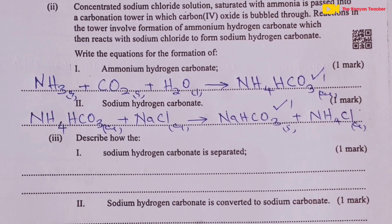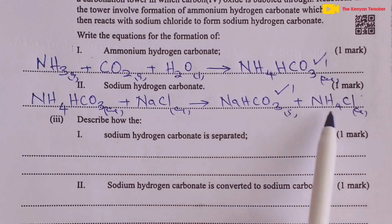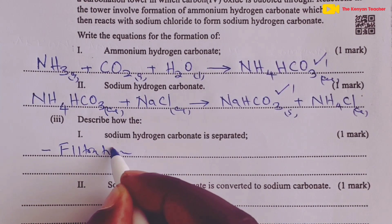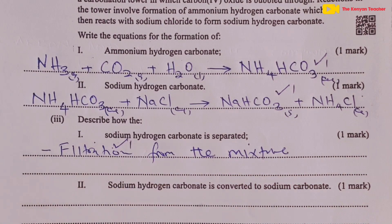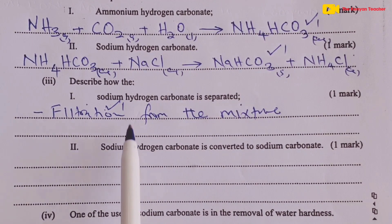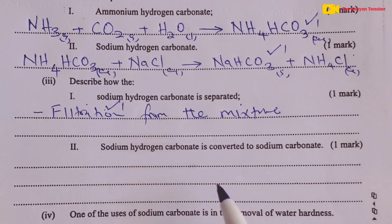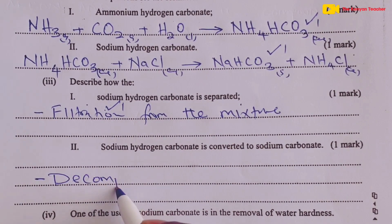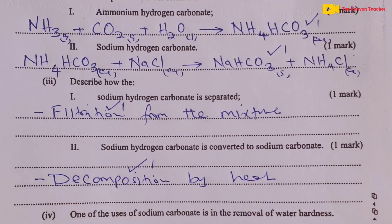Part 3, Roman 1: sodium hydrogen carbonate is separated from the mixture by filtration, for one mark. Part 3, Roman 2: the sodium hydrogen carbonate obtained is converted to sodium carbonate by thermal decomposition — decomposition by heat — for the next mark.